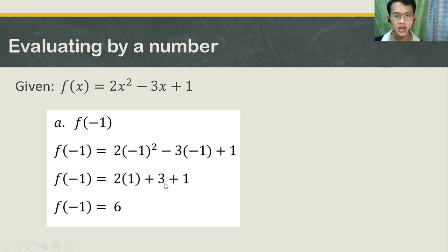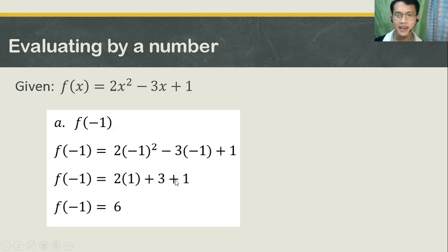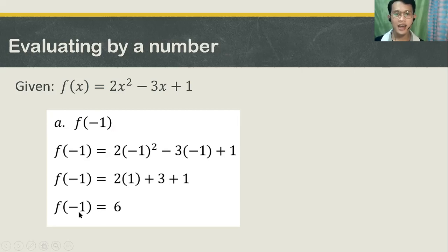So that's plus 3 and plus 1. Next, 2 times 1 is 2, plus 3 is 5, plus 1 is 6. Therefore, our f of negative 1 is equal to 6.